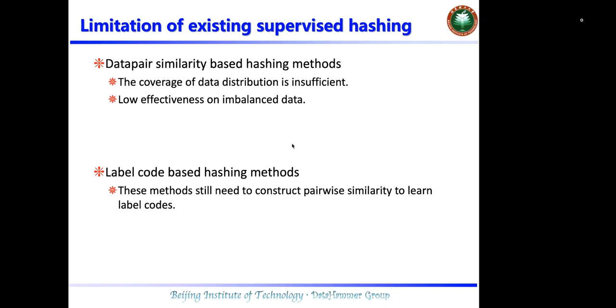Most of them can be roughly divided into two categories: data pair similarity-preserved hashing methods, and label code-based hashing methods.